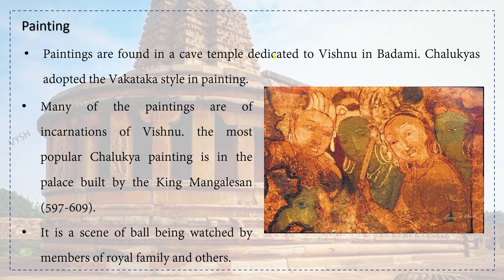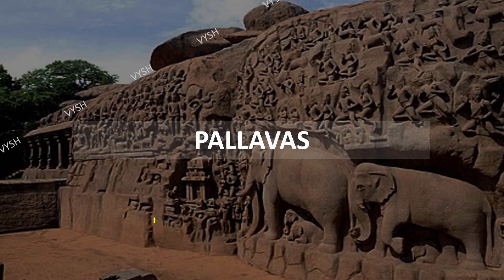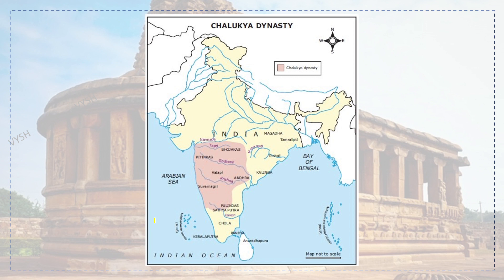Paintings are found in the cave temple dedicated to Vishnu in Badami. The Chalukyas adopted the Vakataka style in painting. Many of the paintings are of incarnations of Vishnu. The most popular Chalukyan painting is in the palace built by King Manganesha, depicting a scene of a ball being watched by members of the royal family and others.